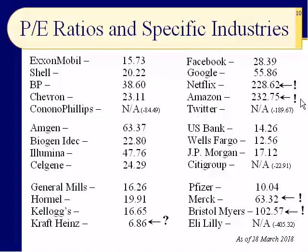Looking at Internet companies, the disparity is even crazier. Google has twice the PE of Facebook. Netflix and Amazon have outrageous PEs — investors must believe they're going to take over the world. As for Twitter, it's incredibly popular but can't make money yet. The NA shown for Twitter stands for not applicable — you can't meaningfully compute a PE without positive earnings. If you divide the price by negative earnings, you get a negative PE, which doesn't make sense, so they put NA.